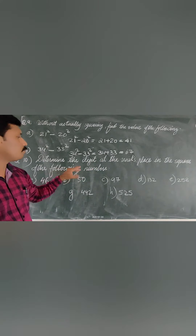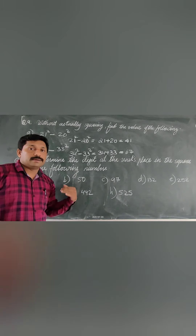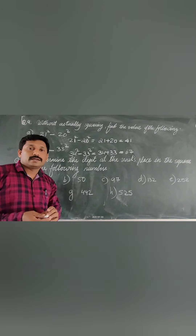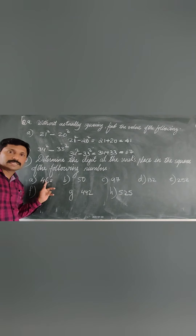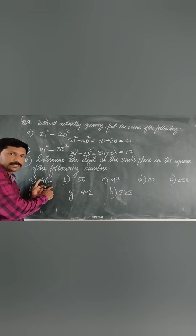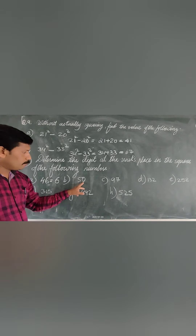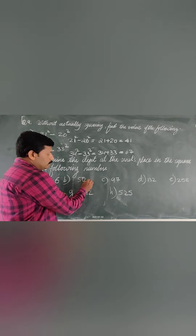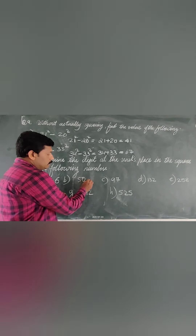Question number 10: determine the digit at the unit place of the squares of the given numbers. We want to decide what the unit digit of the square of each number will be. Using the property table: 46 has unit digit 6, so its square also ends in 6. 50 has unit digit 0, so its square unit digit is also 0. 97 has unit digit 7, and if any number ends in 3 or 7, its square unit digit will be 9.